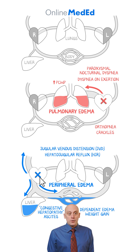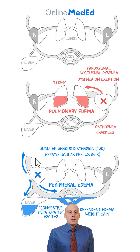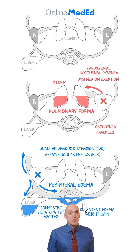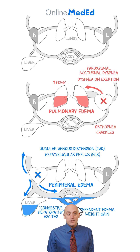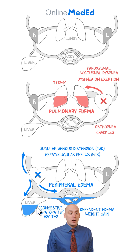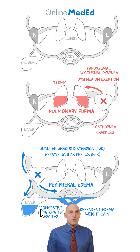With right heart failure, you get peripheral edema and distention of veins — you'll see jugular venous distention, positive abdominojugular reflux, dependent edema, and weight gain. Note it's dependent, not pedal — someone who spends all their time on their back will accumulate fluid in their buttocks, not their feet. It's also possible to develop congestive hepatopathy, and long-standing heart failure may result in ascites.